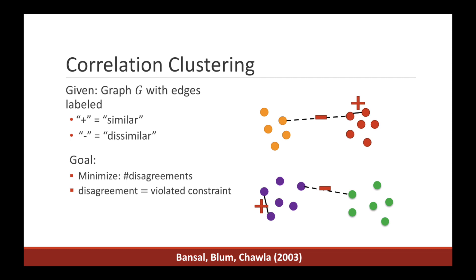More formally, we are given a graph G with n vertices and edges labeled according to whether their endpoints are similar or not. Suppose we cluster the vertices in some way. An edge disagrees with the clustering if it is a similar edge across two clusters or a dissimilar edge inside one. The classical correlation clustering problem asks us to find a clustering which minimizes the total number of disagreements.